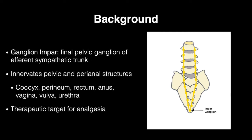The ganglion impar is the first pelvic ganglion of the efferent sympathetic trunk and innervates pelvic structures including the coccyx, perineum, rectum, anus, vagina, vulva, and urethra. It is positioned just anterior to the sacrococcygeal joint within the pre-sacral space, adjacent to the posterior aspect of the rectum.